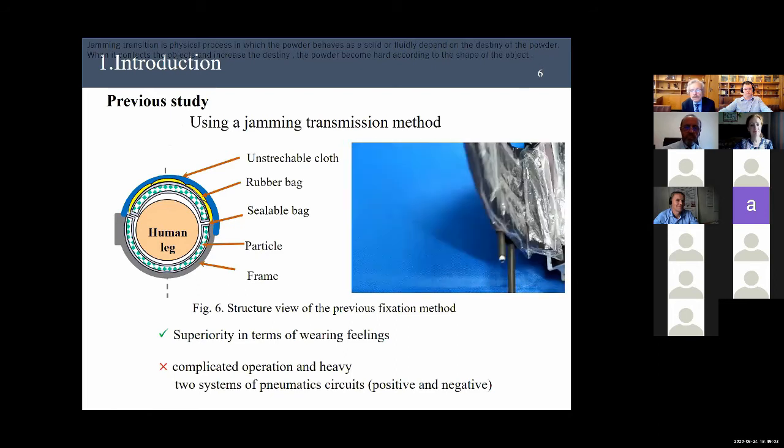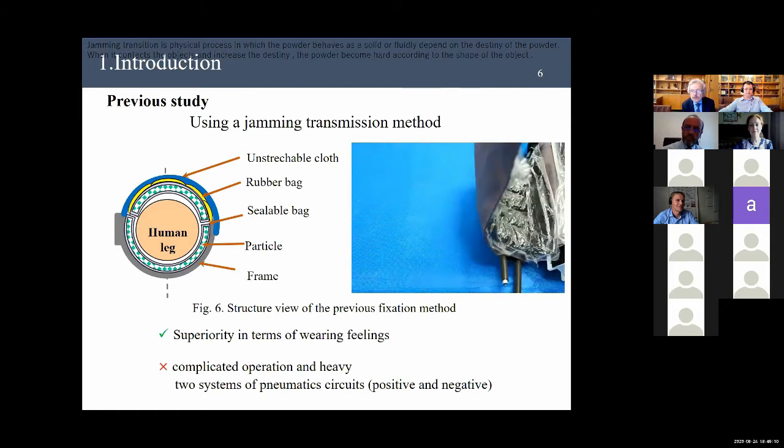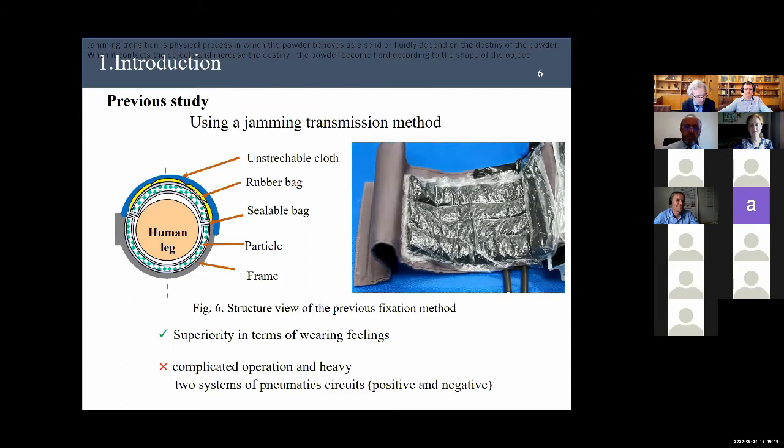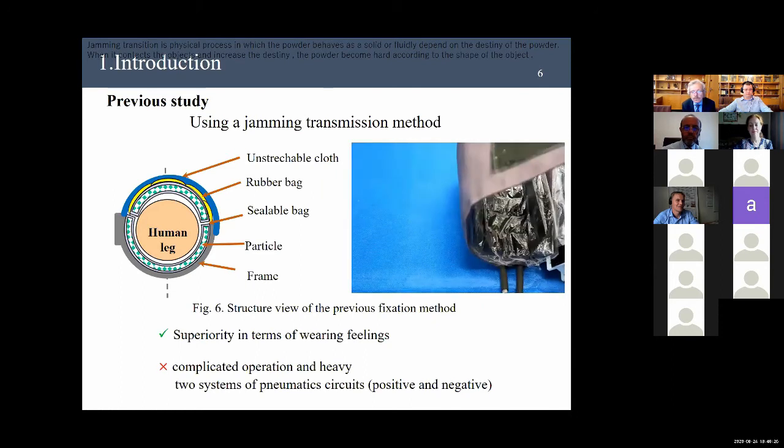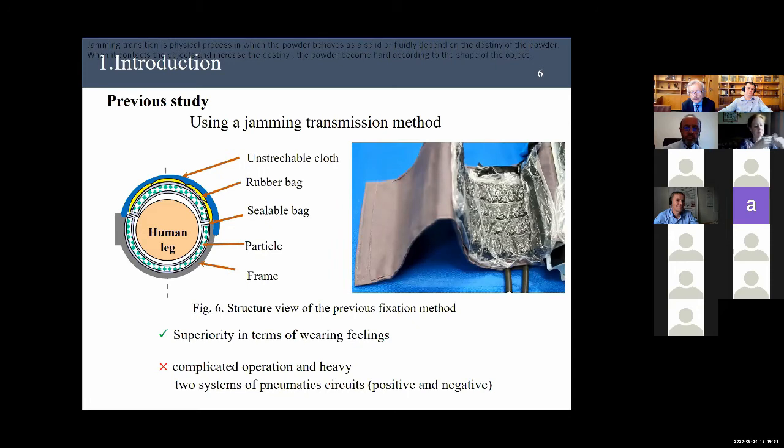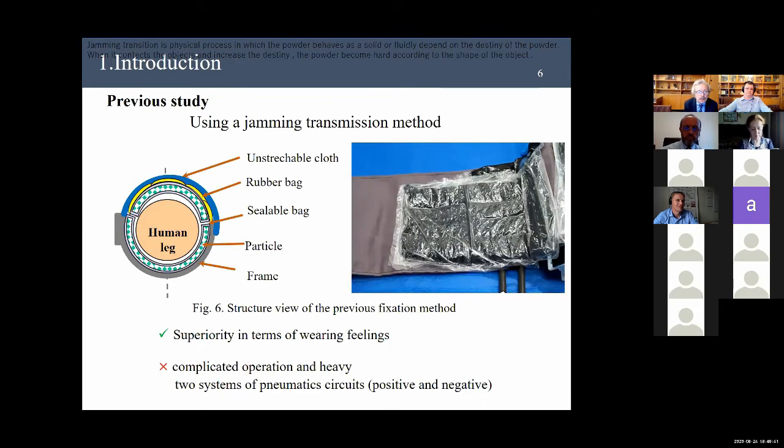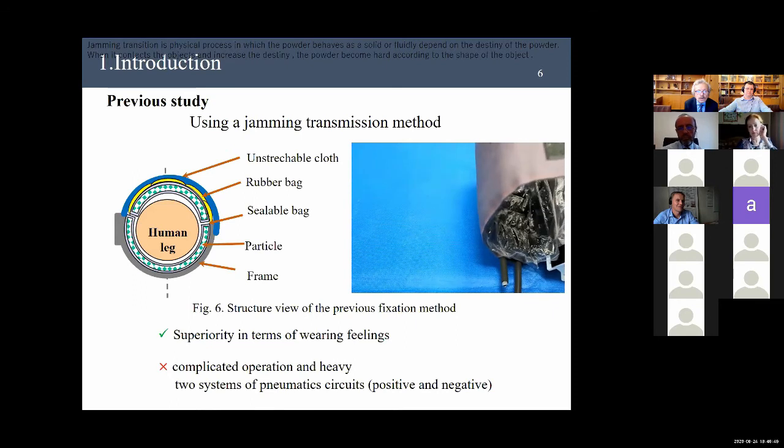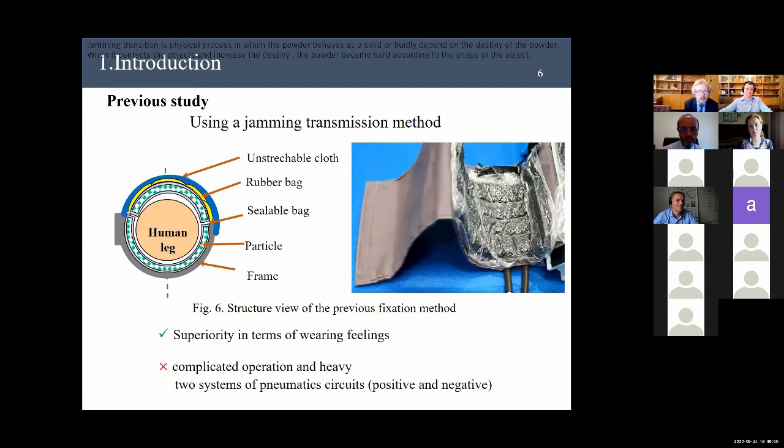In a previous study, we proposed a fixation method using a jamming transition that can deform based on body shape. Jamming transition is a physical process in which the powder behaves as a solid or fluid depending on the density of the powder. When it contacts the object and increases the density, the powder became hard according to the shape of the object. Additionally, we conducted a sensory evaluation experiment and compared the existing fixed part with the prototype fixed part. This experiment confirmed that the fit was better when compared to that of the existing fixed part. However, the fixed part using jamming transition required two pneumatic systems, namely positive air pressure and negative pressure generation.